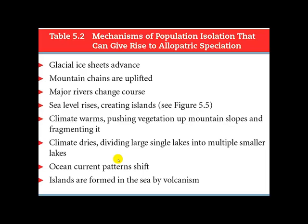Alright, let's see what you came up with. Here are some possible reasons: glacial ice sheets advancing; mountain chains uplifting and preventing a species from getting from one area to another; major rivers changing course; sea levels rising and creating islands; climate warming pushing vegetation up mountain slopes so certain plants can only survive at higher elevations while lower varieties perish; climate drying and dividing a large single lake into multiple smaller lakes; ocean current patterns shifting; or islands formed in the sea by volcanism.